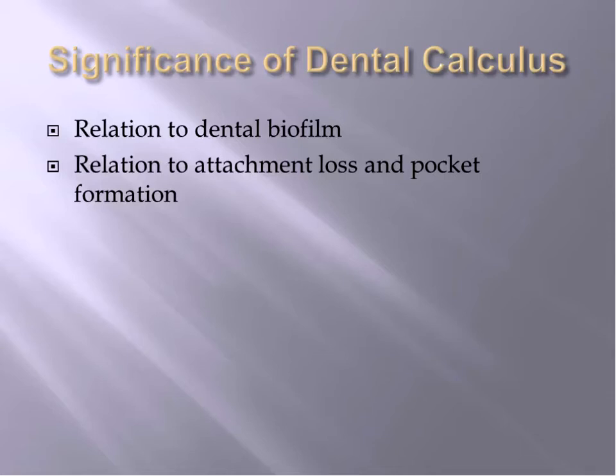Subgingival biofilm contains pathogenic bacteria that cause inflammation and destruction in the soft tissues and can lead to loss of attachment and the development of periodontal pockets. With increased pocket depth, you have greater amounts of biofilm accumulating with increased numbers of pathogenic microorganisms — supragingival aerobic gram-positive versus subgingival anaerobic gram-negative bacteria. Irritation to the pocket lining stimulates greater flow of gingival crevicular fluid, which contains minerals for subgingival calculus formation. Calculus is mineralized biofilm, so the biofilm bacteria next to the tooth surface is the part that mineralizes first.